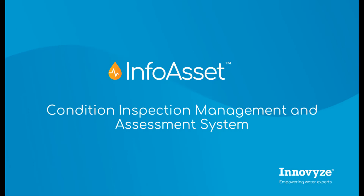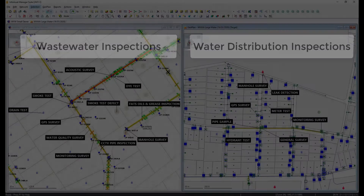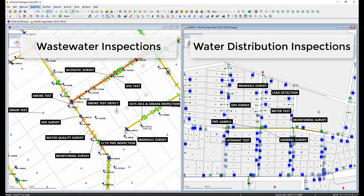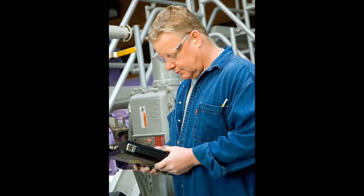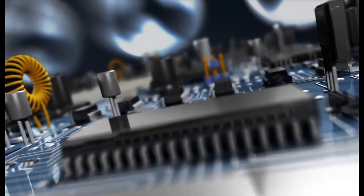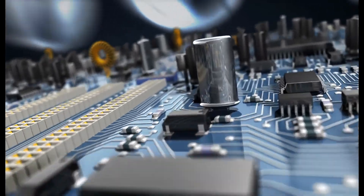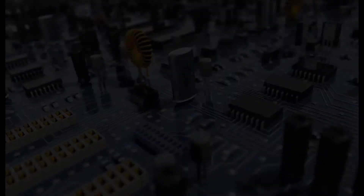There are many ways to inspect the condition and performance of your water and wastewater networks. Managing these programs and the long-term storage and use of this data is a problem for many utilities, resulting in a poor return on the investment. Manual review is time intensive, inefficient and prone to errors, and proprietary software systems lock the data away, making sharing and dissemination of this data frustratingly difficult. InfoAsset lets you make the most of your inspection investments by keeping survey data accurate, reliable, relevant and accessible across the enterprise.